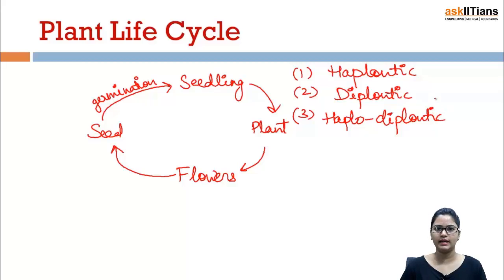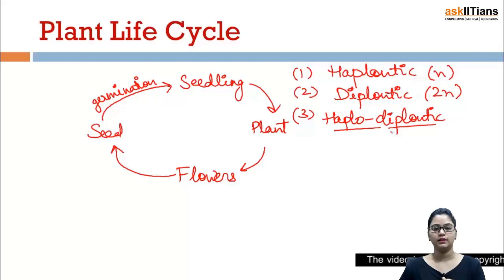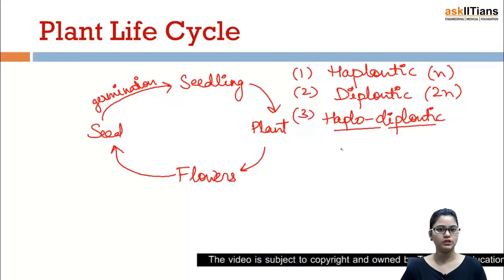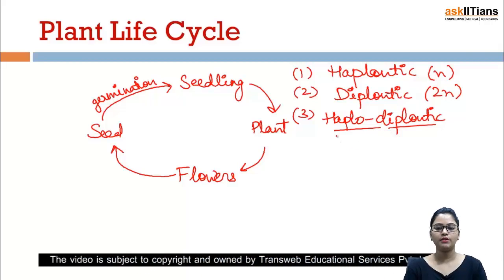What is the haplontic life cycle? If the major dominant phase is haploid and if the dominant phase, the major dominant phase is diploid, then it will be called diplontic life cycle. And if both the things will alternate, you can say this will be 50 percent of haploid and diploid, so it will be called as haplodiplontic life cycle.